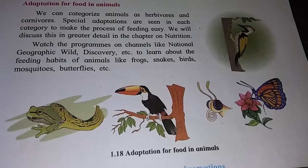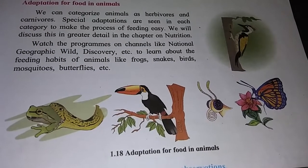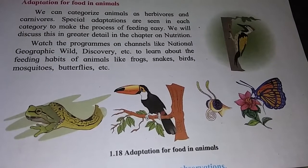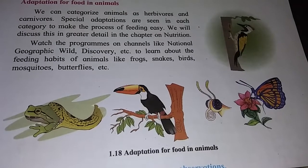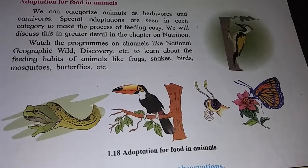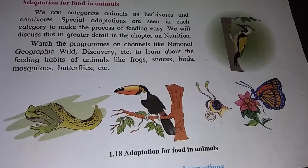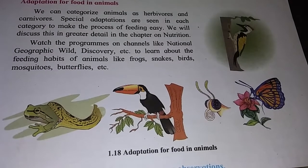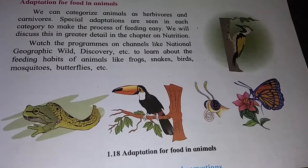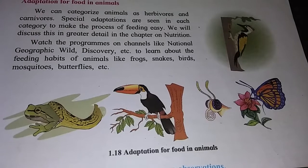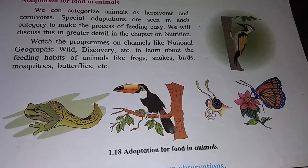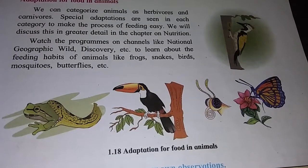Parasites are animals that depend upon other animals for their food. They live on or inside the body of other animals. Some of them suck blood. For example, leech and mosquito.